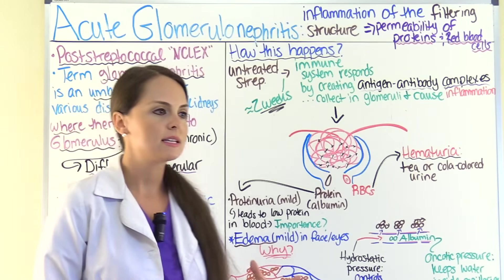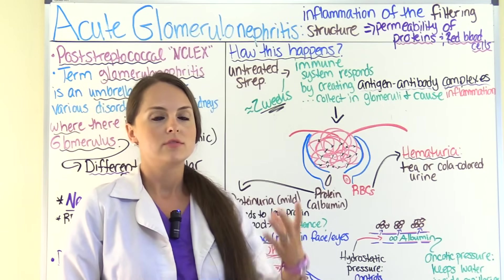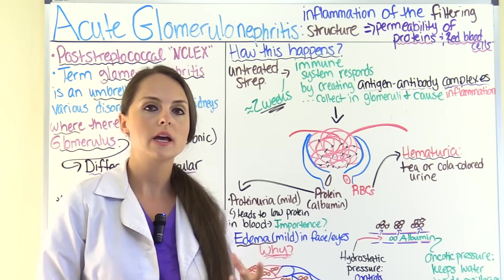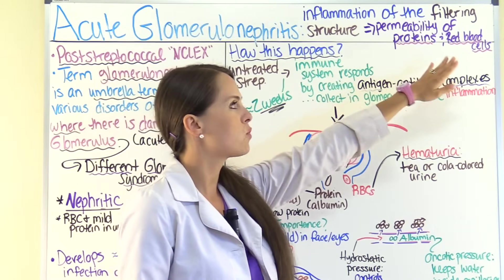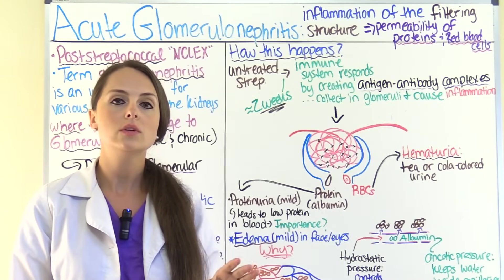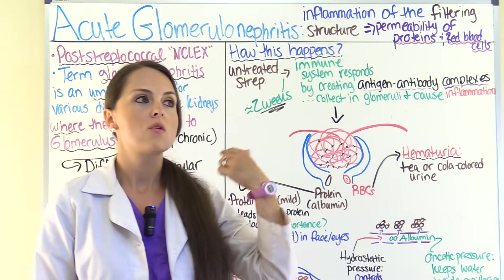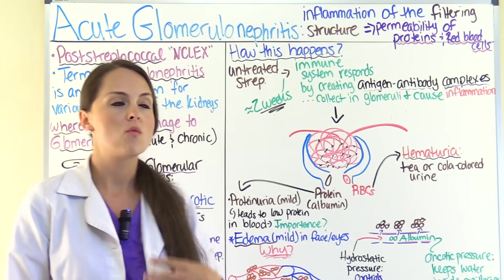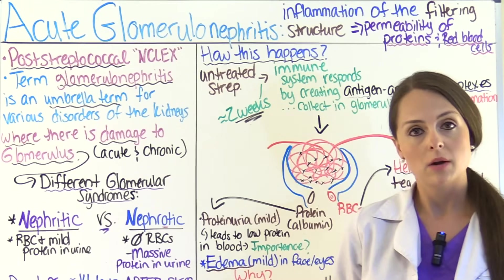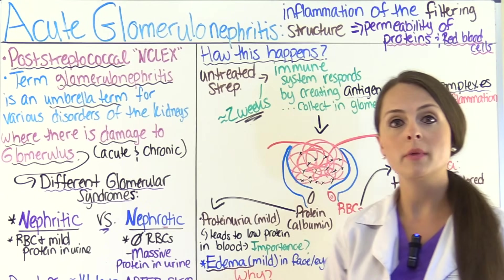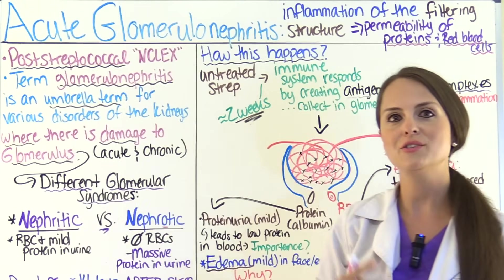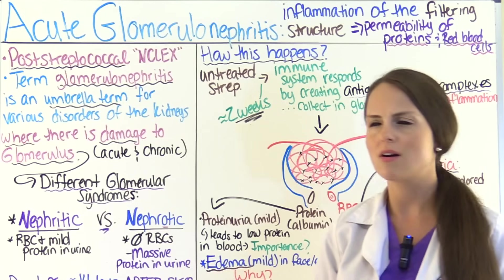What happens is that the glomerulus is inflamed and not working like it should, so it starts to become permeable to proteins and red blood cells. Normally the glomerulus only filters water, ions, and waste — not proteins and red blood cells. For NCLEX purposes, the type of acute glomerulonephritis we're going to concentrate on is called the post-streptococcal kind.